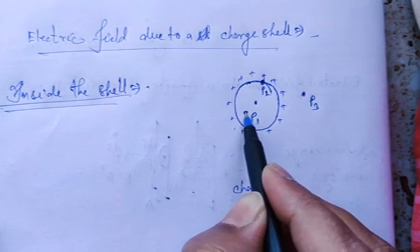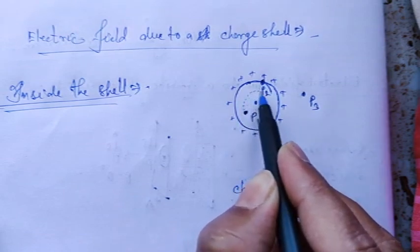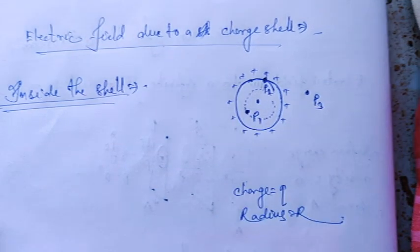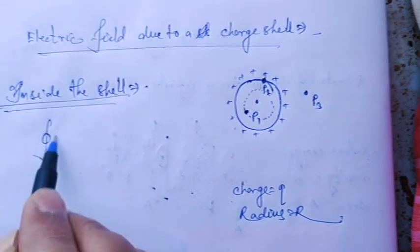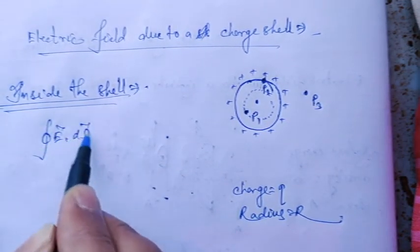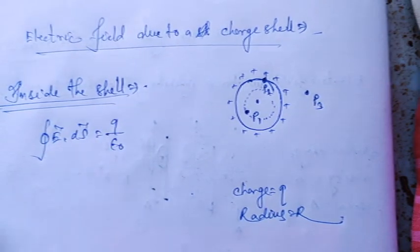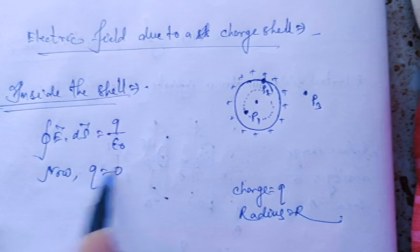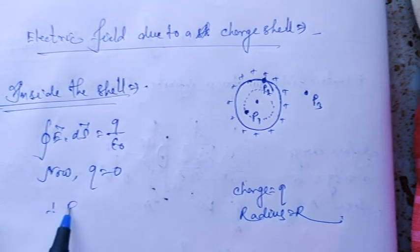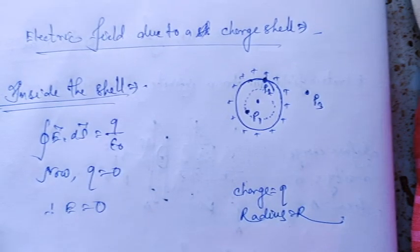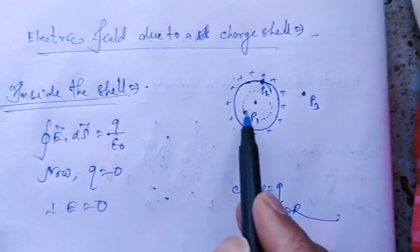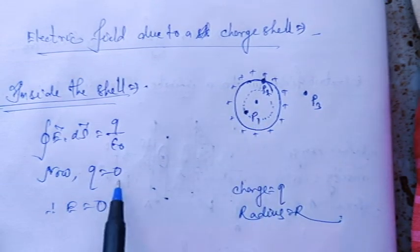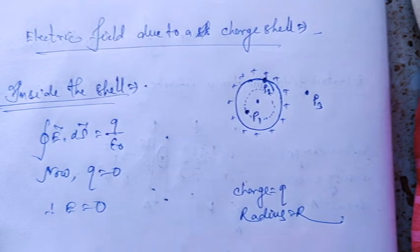Inside the shell, at point P1, we draw a Gaussian surface which is of course a sphere. Applying Gauss's theorem: the integral of E dot ds equals q by epsilon naught. Now q equals zero, because there is no charge enclosed inside. Therefore the electric field equals zero — a simple case. Since there is no charge enclosed, the electric field inside is zero.